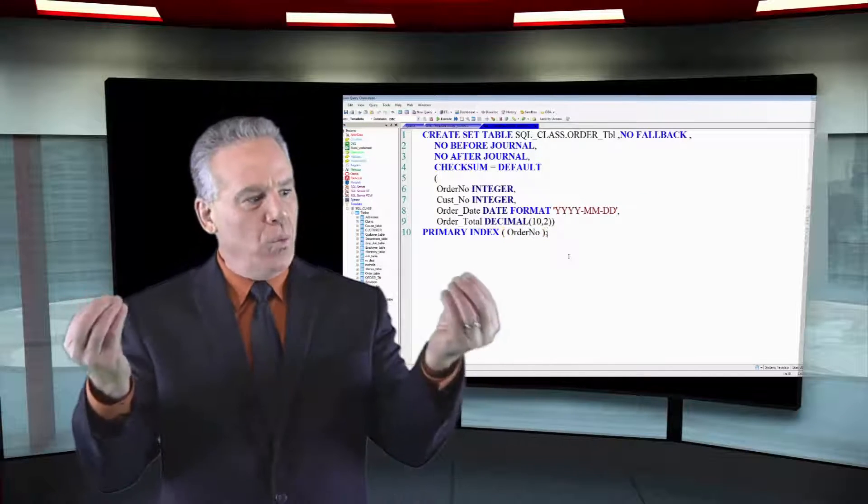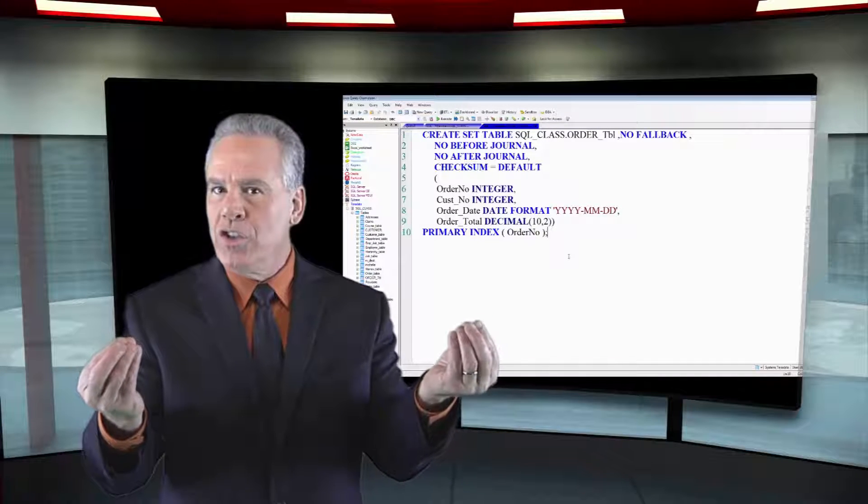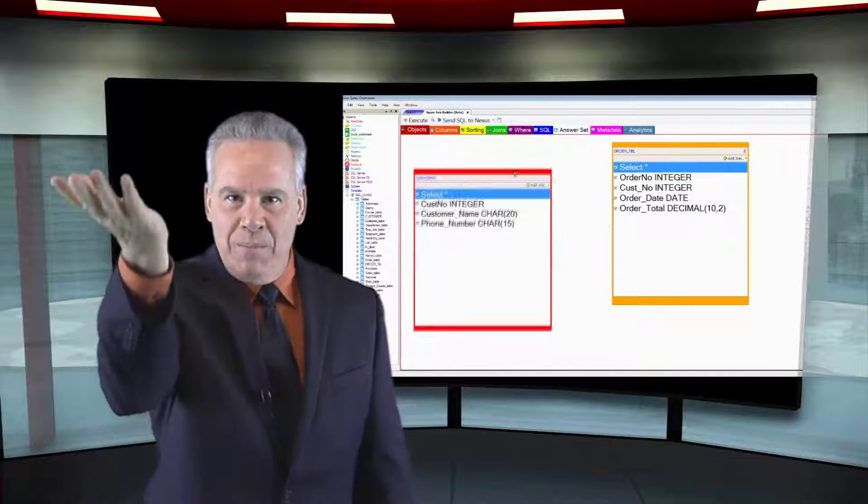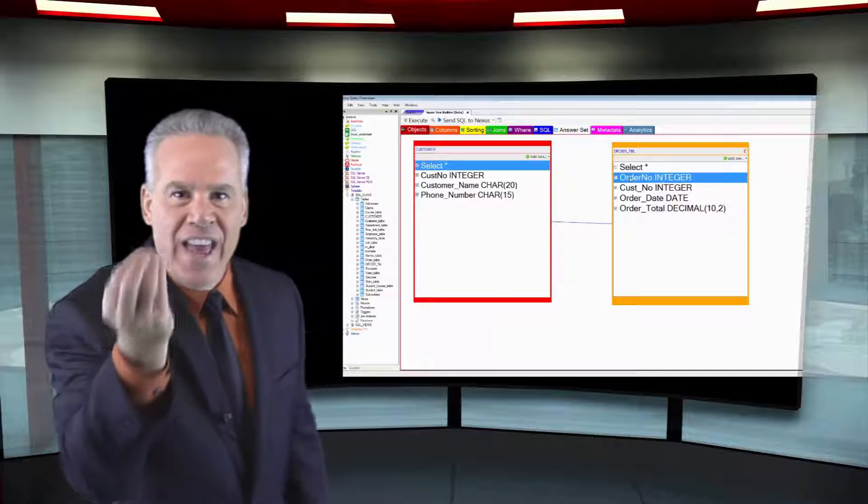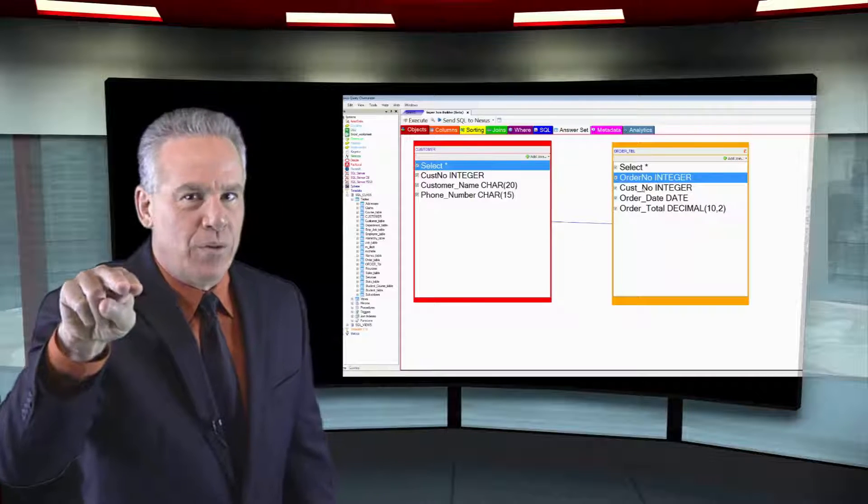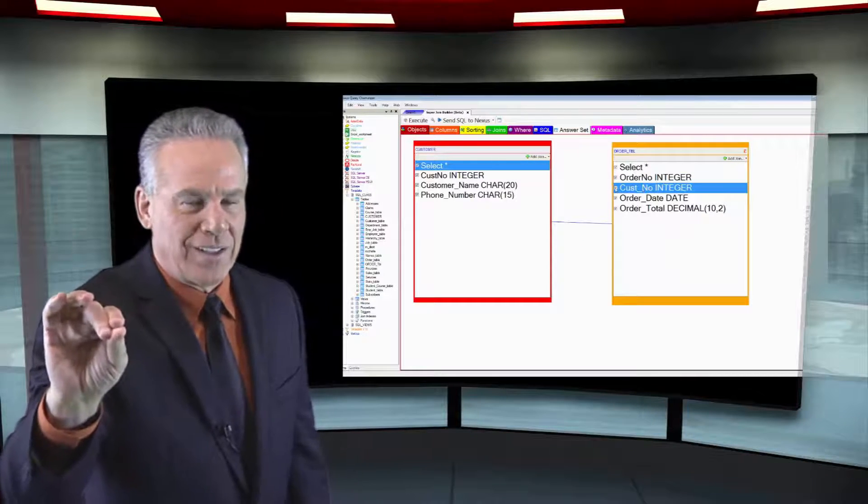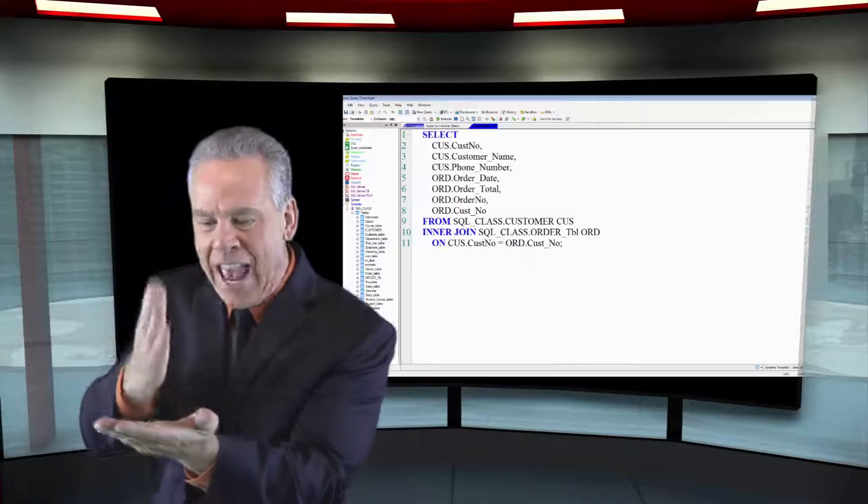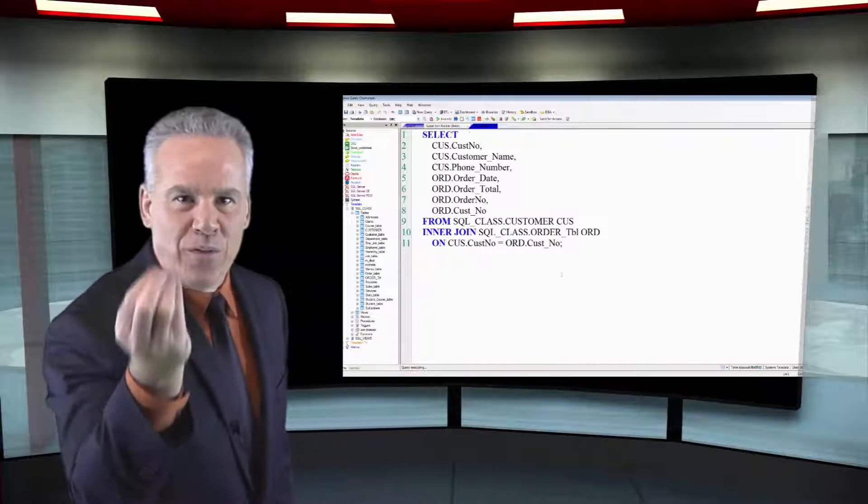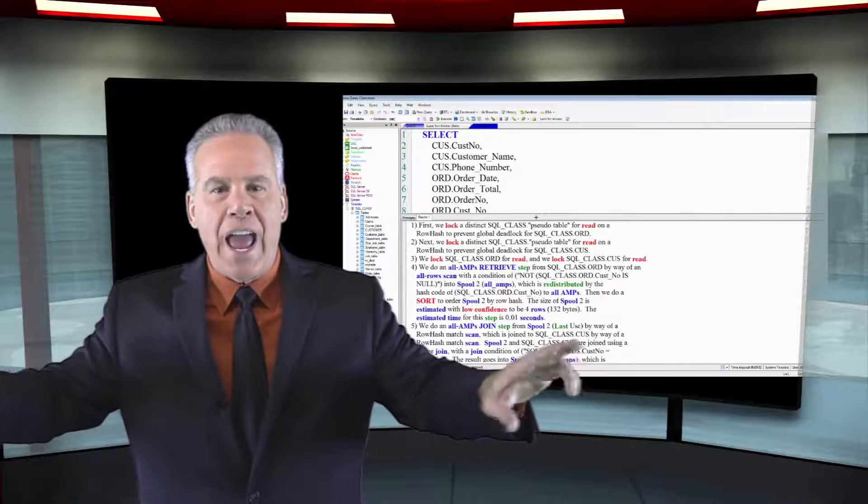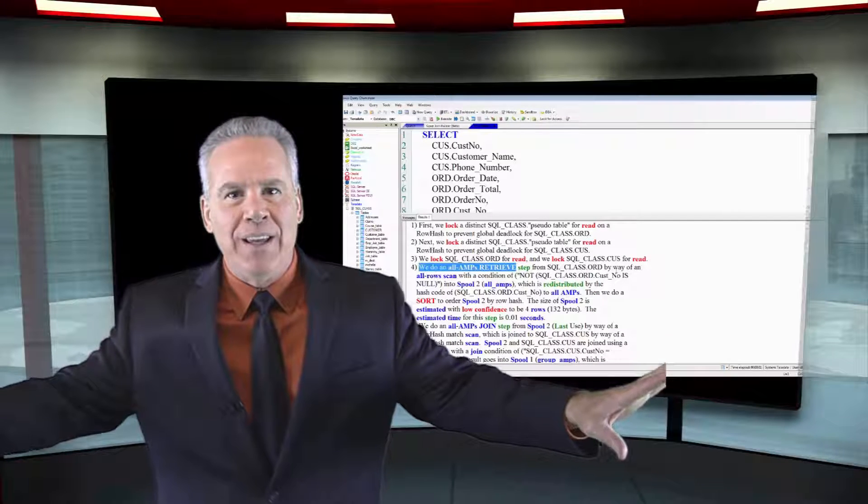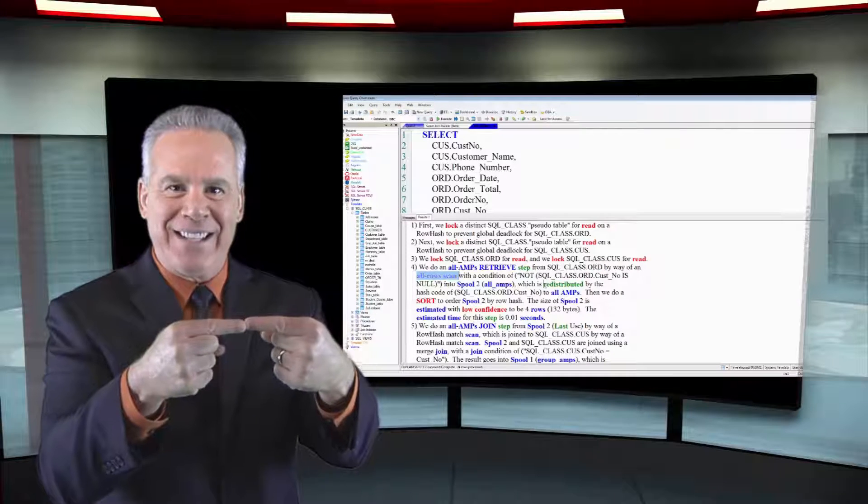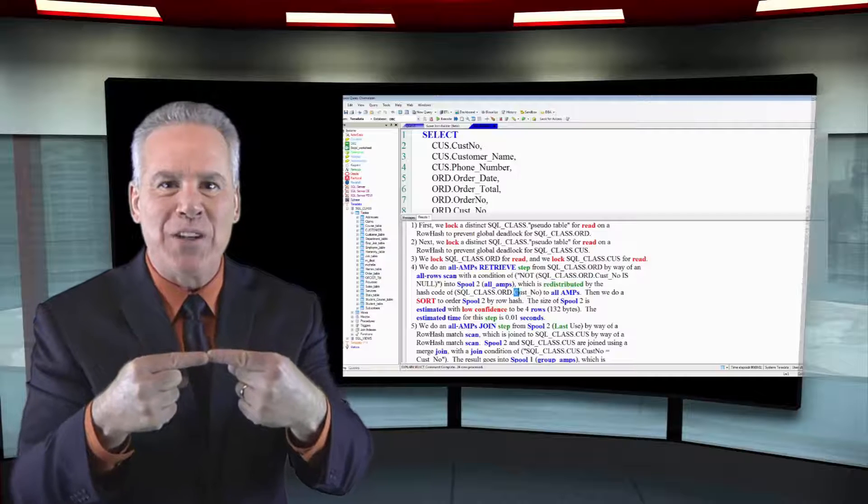So we're joining on Custno and Custno. What the parsing engine is going to have to do is instruct each amp to bring their order table into memory as well as their customer table. But then it will say, redistribute your order blocks, not by order number, but by Custno. Then the hashing takes place with that beautiful hashing formula and the rows are hashed to the proper amps and they will be on the amp where the customer number and the customer number matches. And that's the way this is going to work.